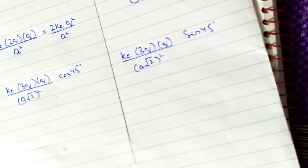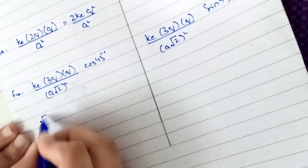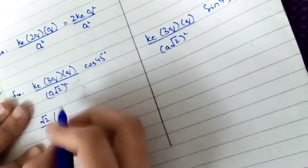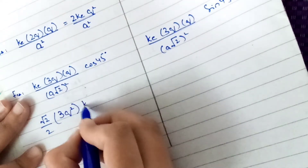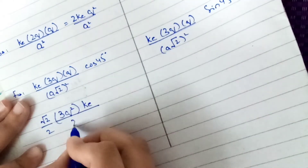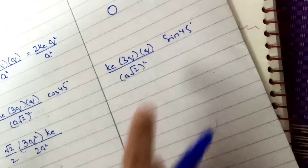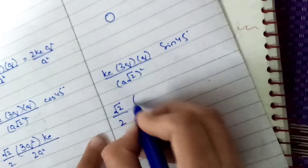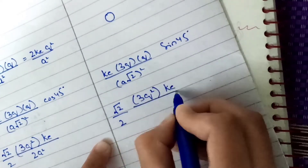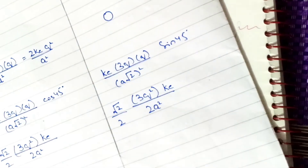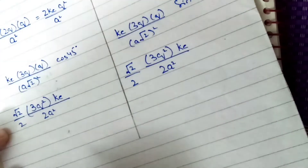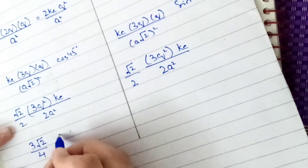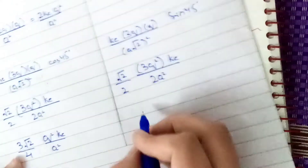Simplifying, cos45° = √2/2. So multiplying through: ke * 3q² / (a√2)² * (√2/2) = ke * 3q² / (2a²) * (√2/2) = 3√2/4 * ke * q² / a². The same result applies for the y-component using sin45° = √2/2, giving 3√2/4 * ke * q² / a².